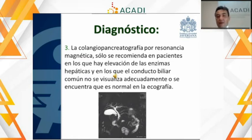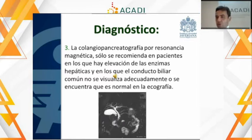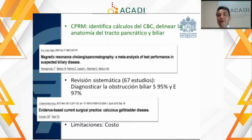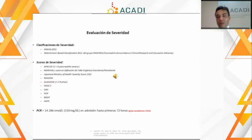Únicamente se justificaría el uso de la resonancia en el paciente que tenga elevación persistente de bilirrubina al día 2 o 3 que no baje, o elevaciones muy grandes, realmente por encima de 5, donde podríamos considerar precozmente el uso de la colangiorresonancia. El rendimiento de la colangiorresonancia para la litiasis es bastante bueno, sobre todo en vía biliar dilatada; no es tan bueno cuando el colédoco tiene calibre normal, pero es aceptable.